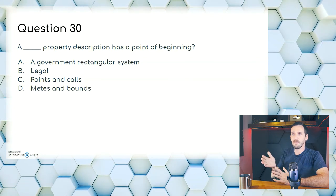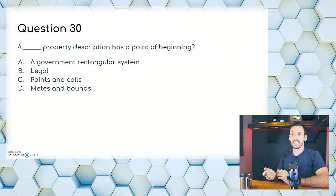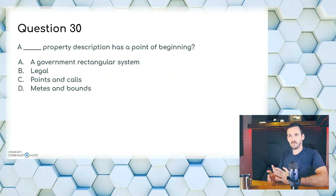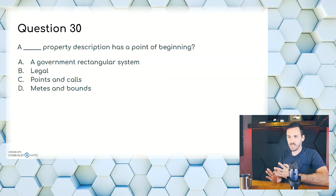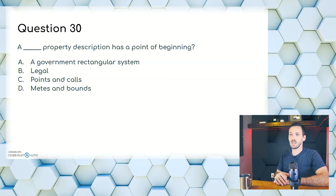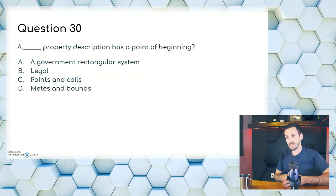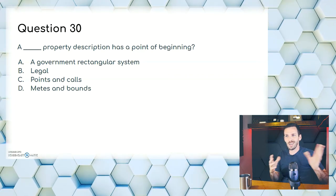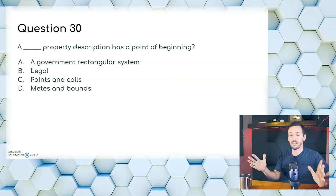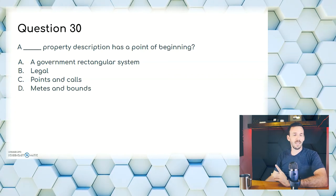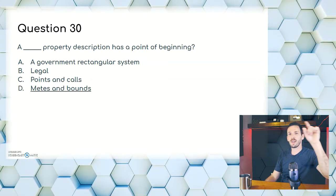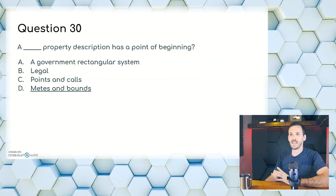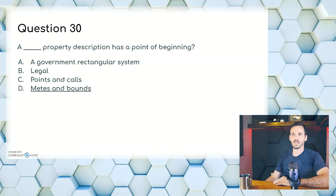Question thirty: a blank property description has a point of beginning. A, government rectangular system; B, legal; C, points and calls; or D, metes and bounds. The government rectangular system is a general square — there's no real start point. Legal and points and calls are irrelevant here. Metes and bounds is where you say from that rock to that tree to that cliff back to that rock. The answer here is D, metes and bounds.